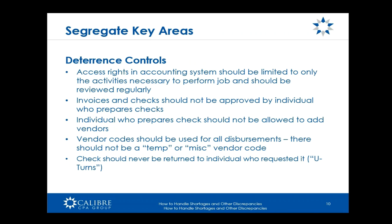What are some ways to deter fraud in those schemes? These are basic things you can do — you don't need a huge accounting staff. They can all be done with a small staff, maybe with some board involvement. The first control: access rights in the system need to be limited to only the activity necessary to perform the job and should be reviewed regularly. Too often we see everyone given full rights for ease. The AP person may need payroll access once a year while the payroll person is on vacation, so they get full rights — that is not what you want.